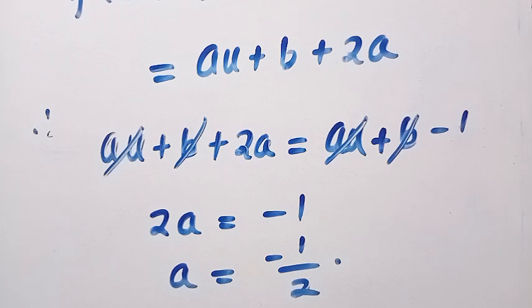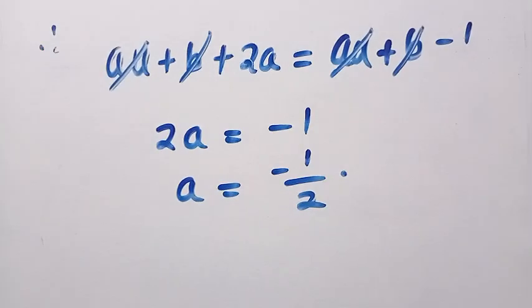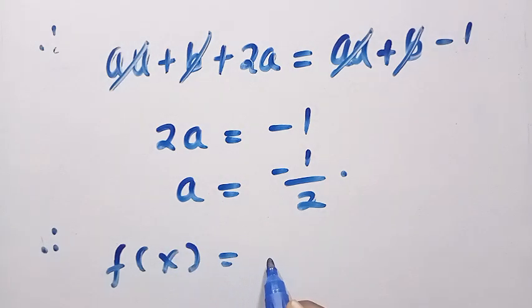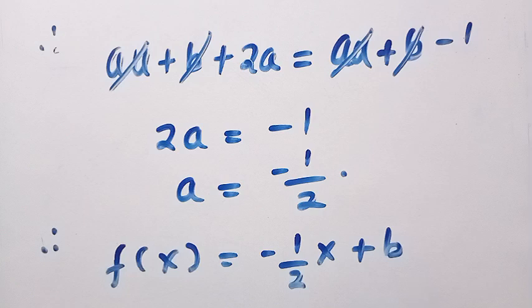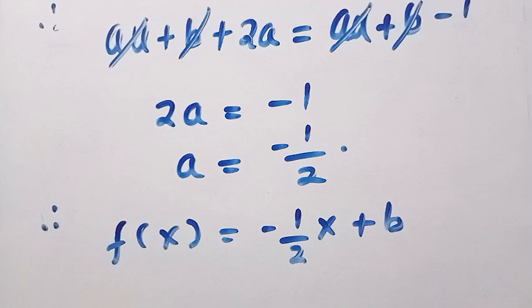And when we substitute this thing back, we are going to have f(x) equals minus 1 over 2 x plus b, where b is an arbitrary constant. And we just leave it like that.